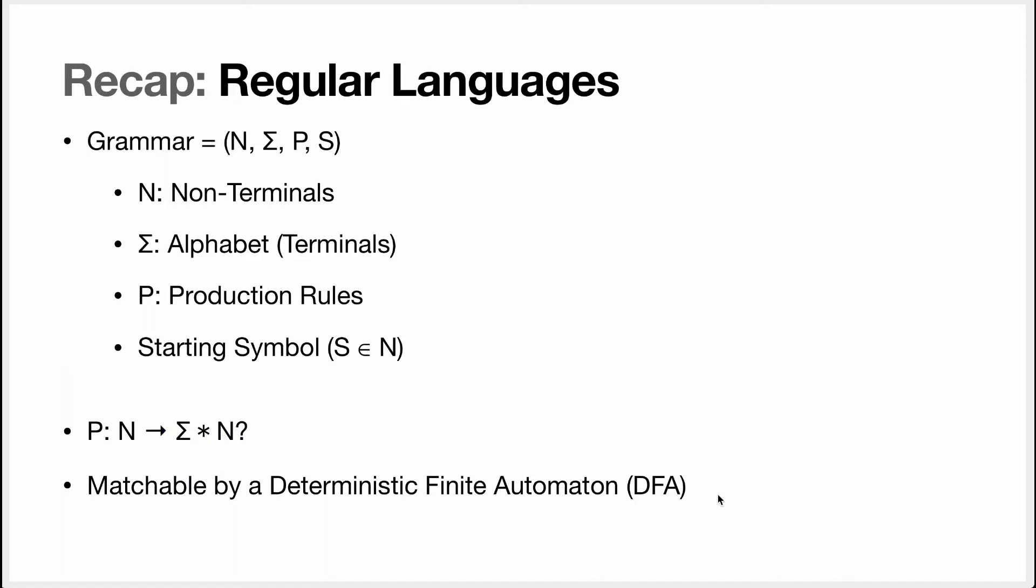We also said that regular languages were matchable using a deterministic finite automaton, a DFA. That's the simplest automaton that you can use to match a regular language. It's the automaton where you only have simple, unambiguous character or token transitions.